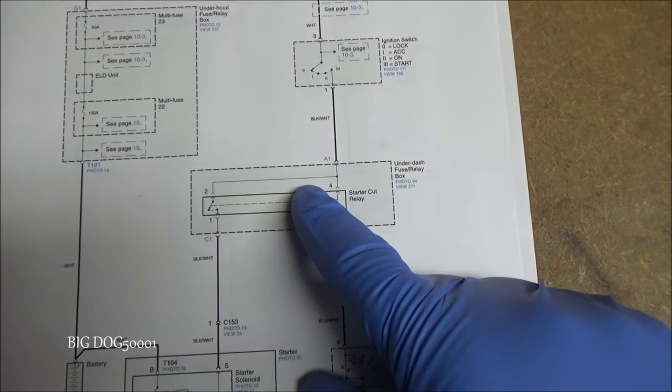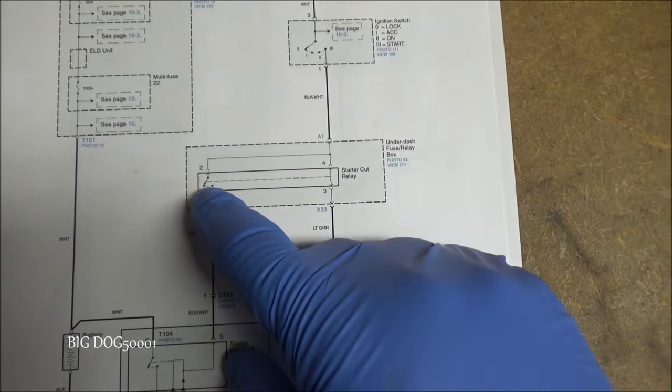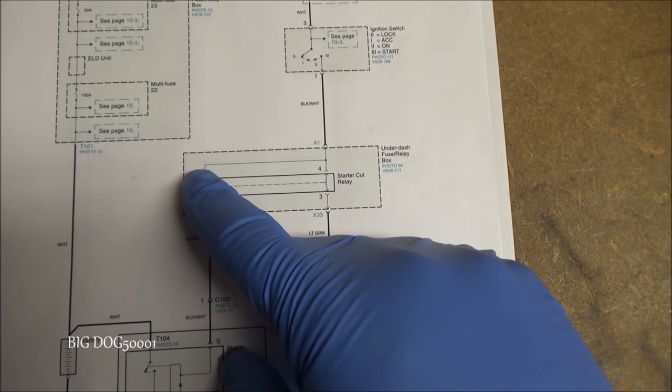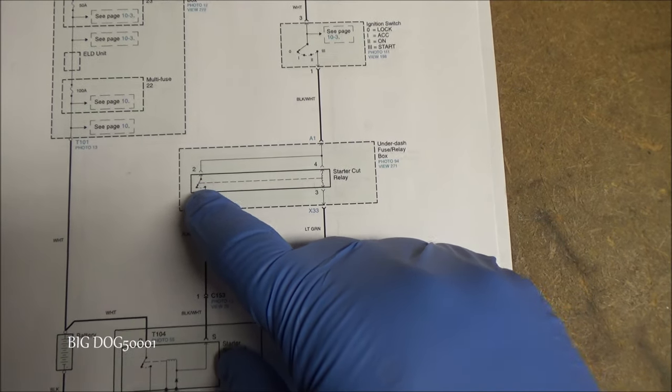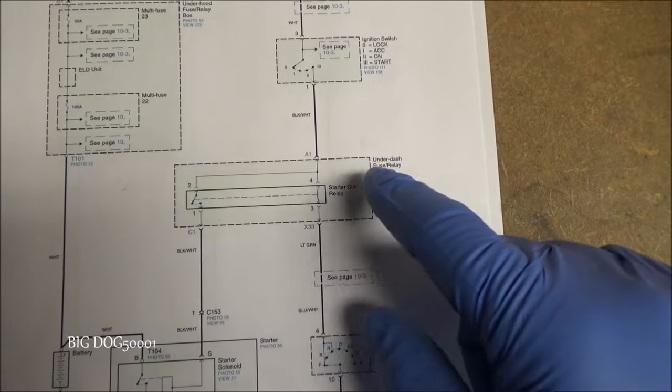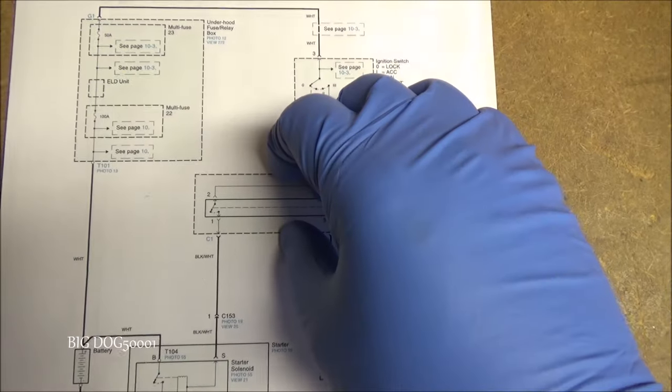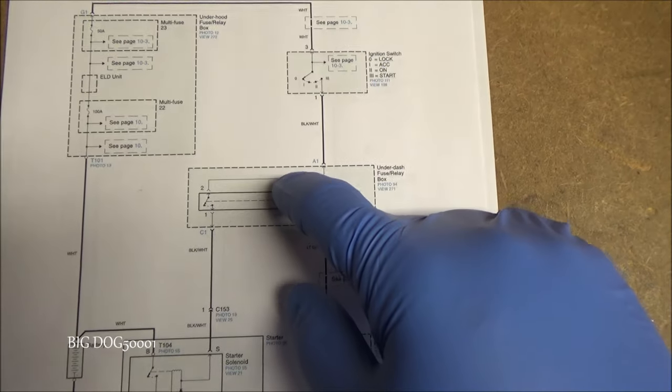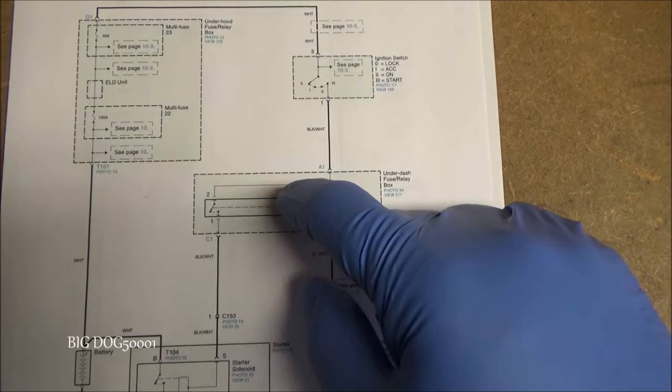If our relay is the issue, sometimes we can just tap on it. A lot of times it's either stuck right here or not making a good contact right here. So just tapping on it can break that free and all of a sudden cause our relay to work. Sometimes pulling the relay out and reinstalling it can fix it also. And that can get you out of a jam if you have a no start.